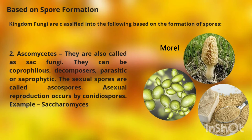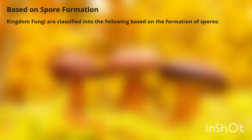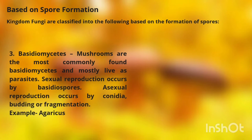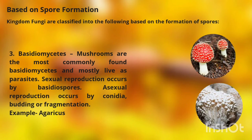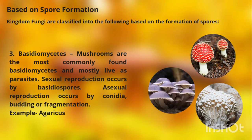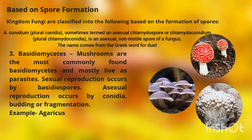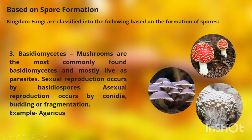The third classification is Basidiomycota or Basidiomycetes. Mushrooms are the most commonly found Basidiomycetes and mostly live as parasites. Sexual reproduction occurs by basidiospores, and asexual reproduction occurs by conidia, budding, or fragmentation. Examples include the fly agaric mushroom, the enoki mushroom, and the Agaricus mushroom.